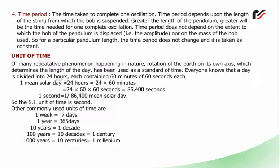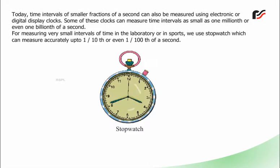Other commonly used units of time: 1 week = 7 days; 1 year = 365 days; 10 years = 1 decade; 100 years = 10 decades = 1 century; 1000 years = 10 centuries = 1 millennium. Today, time intervals of smaller fractions of a second can be measured using electronic or digital clocks — some as small as one millionth or even one billionth of a second. For very small intervals in the laboratory or in sports, we use a stopwatch accurate to 1/10th or even 1/100th of a second.